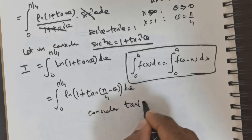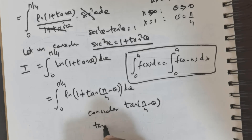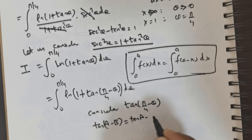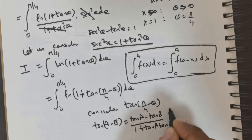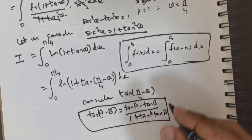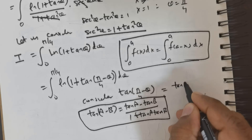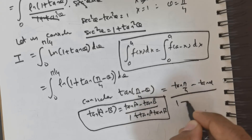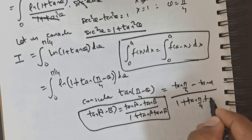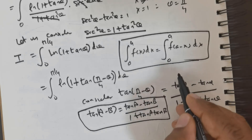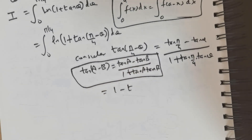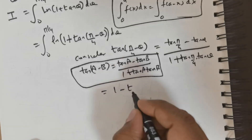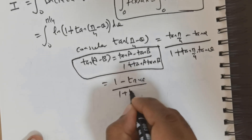Now consider tan(π/4 − θ). Using the formula tan(a − b) = (tan a − tan b) / (1 + tan a · tan b), this equals (tan(π/4) − tan θ) / (1 + tan(π/4) · tan θ). Since tan(π/4) = 1, this simplifies to (1 − tan θ) / (1 + tan θ).